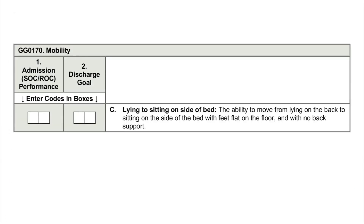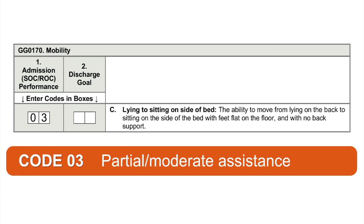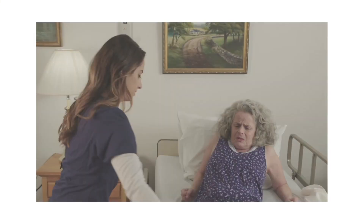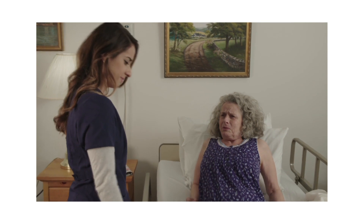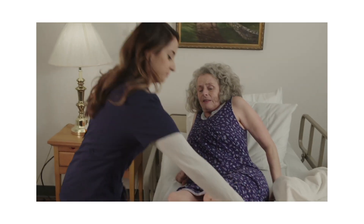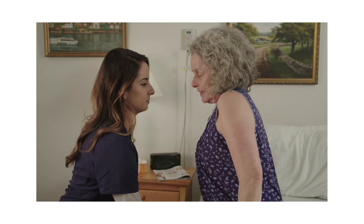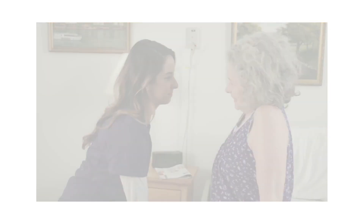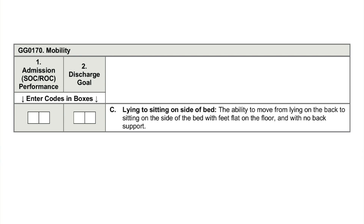The correct answer for Mrs. Brown's admission or start of care performance for GG0170C lying to sitting on side of bed is 03, partial, moderate assistance. As Mrs. Brown began to move to a seated position, the clinician assisted with pivoting Mrs. Brown's legs to the side of the bed. Mrs. Brown required the helper to provide assistance with lifting her legs, which represents partial, moderate assistance with the activity of lying to sitting on side of bed.